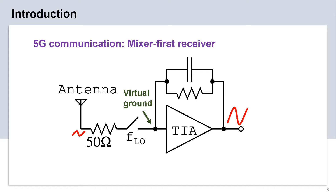This slide shows a typical illustration of the mixer-first receiver. It employs a trans-impedance amplifier in negative feedback. The incoming signal from the antenna is first down-converted to baseband and then amplified using a TIA as shown. Thus, the large signal swing is postponed to the end of the receiver chain. This property of the mixer-first receivers allows them to provide high in-band and out-of-band linearity.